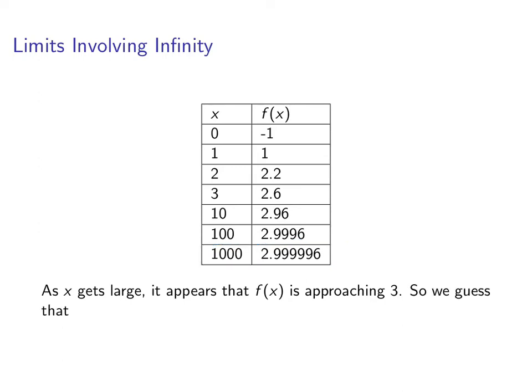So, we're going to make a guess that the limit as x approaches infinity of 3x squared minus 1 all over x squared plus 1 is equal to 3. We'll be able to prove this more precisely in the future.